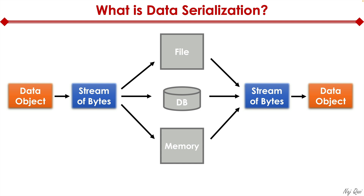Here's an official definition of data serialization: it's a process of converting complex data into a byte stream for storage, transfer, and distribution purposes on physical devices. Different computer systems and environments have their own proprietary data formats — Microsoft Windows has its own proprietary stuff, Apple Macintosh has its own, and Linux has its own.